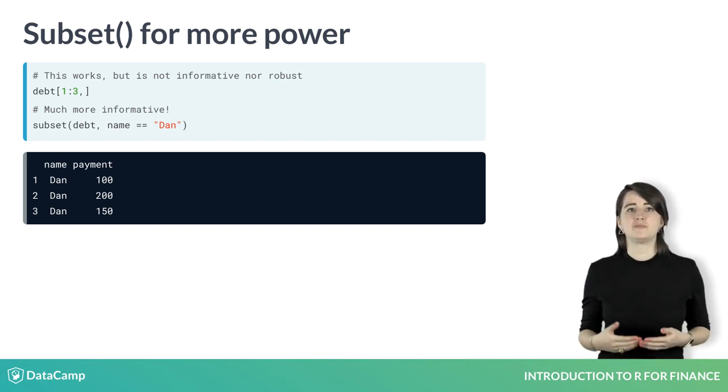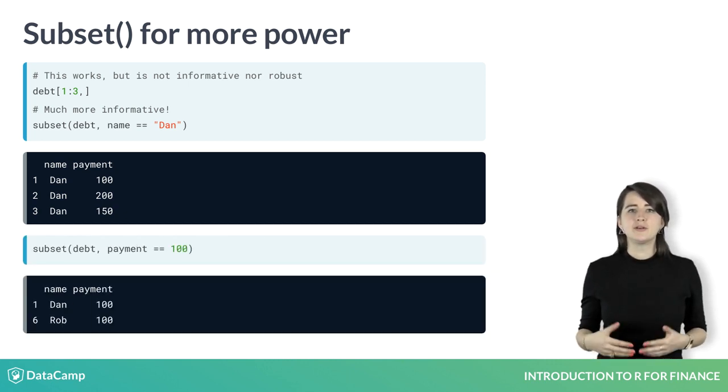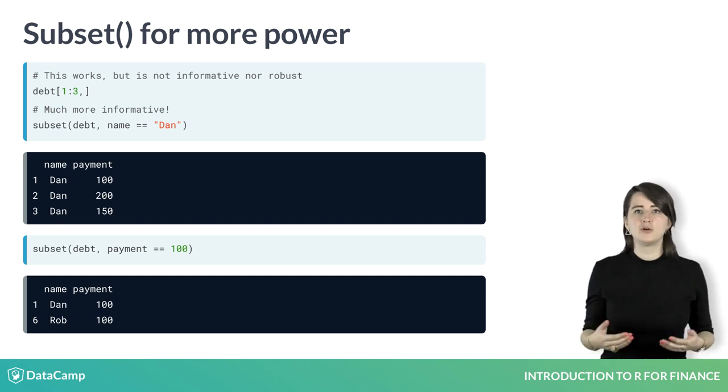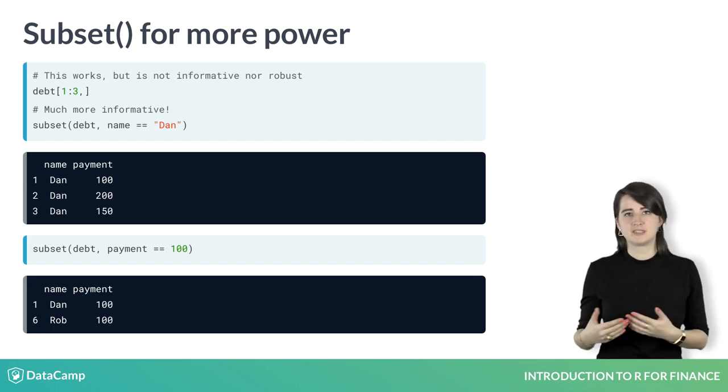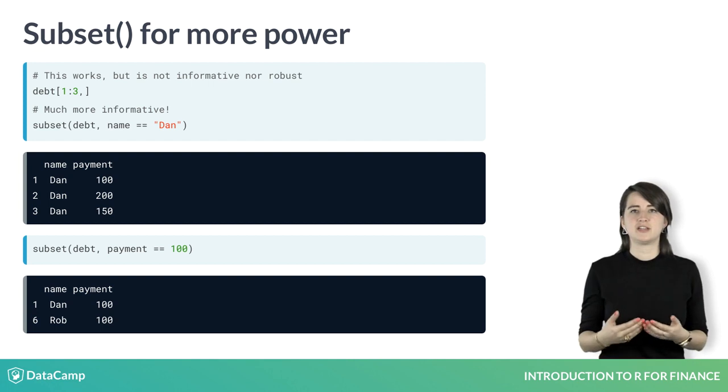We can also subset on numeric columns. To just see rows where payment equals $100, you would do the following. One of the coolest things about this form is that the code is readable from left to right in plain English. You want to subset the debt data frame where payment equals $100. This makes it much easier for others to understand your code.